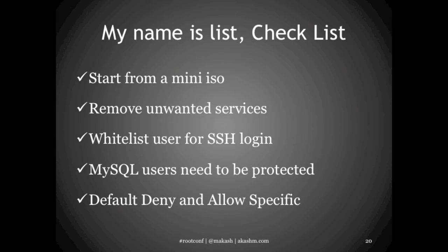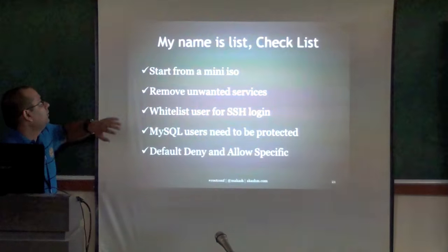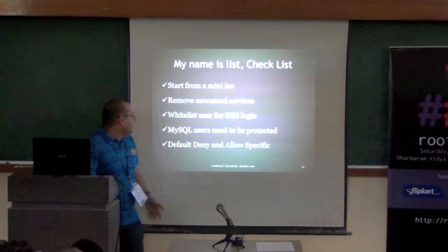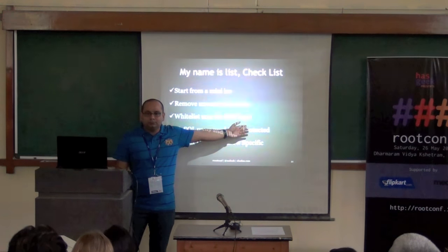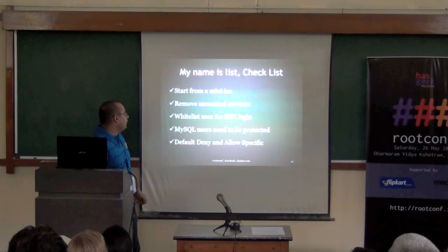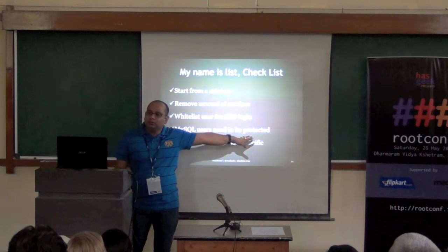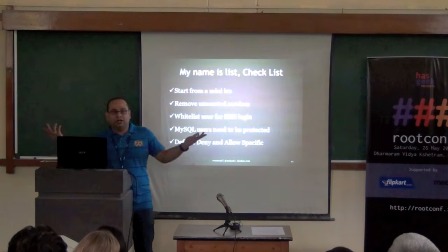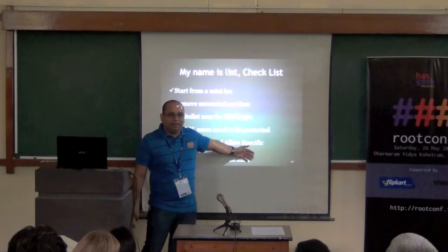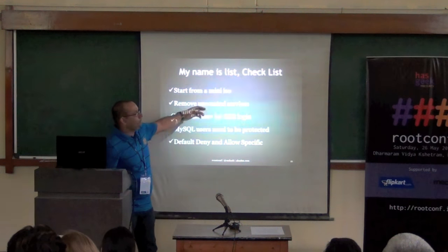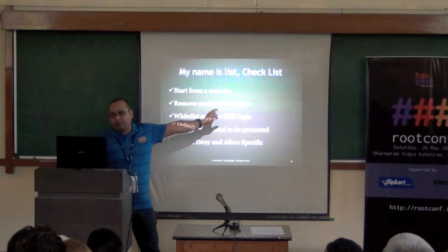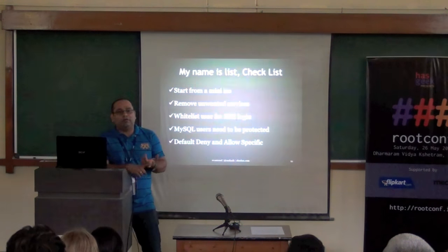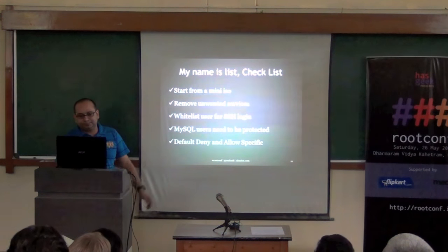So to summarize — and this is definitely less than 10 steps: start from a mini ISO in the ideal case and remove unwanted services to reduce your attack surface. Whitelist users for SSH login — only that user from that IP. The MySQL user has been protected so only that user from that host can access that database. You are not using standard root. You have a default deny in your firewall with allowed ports. You have SSH on port 22 for shell and file access, your web server, and your database.